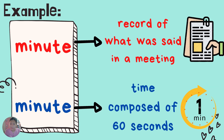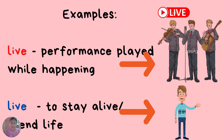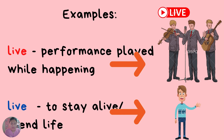Another example: minute and minute. Minute means the record of what was said in a meeting, while minute means time composed of 60 seconds. Minute and minute are homographs — they have the same spelling but with different sounds and meaning. Remember, children: homographs are types of homonyms. They have the same spellings but with different sounds and meaning. For example, live and live. Live means a performance played while happening; live means to stay alive or spend life. Live and live are homographs with the same spelling but different sounds and meaning.